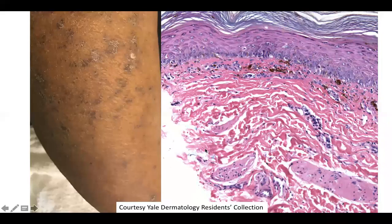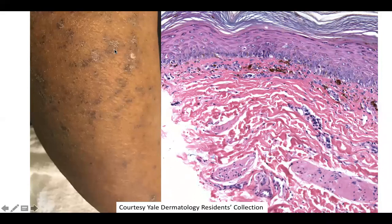Welcome back to DP60. Today we have a CPC of grayish to slightly brown papules on the arm, and these papules have a little bit of scale on the surface.